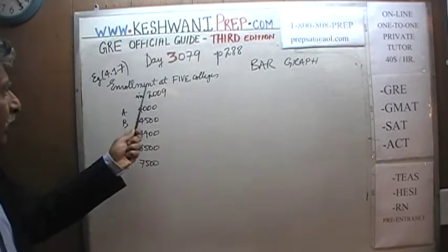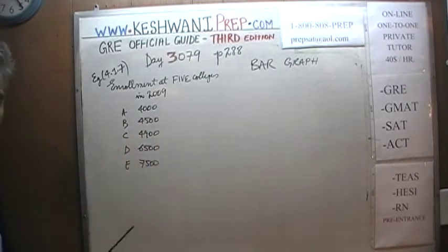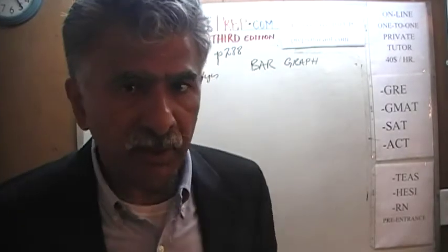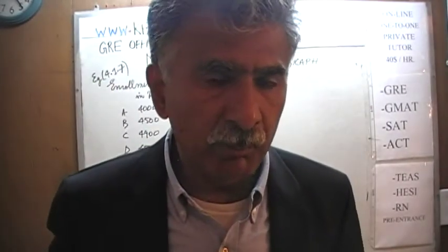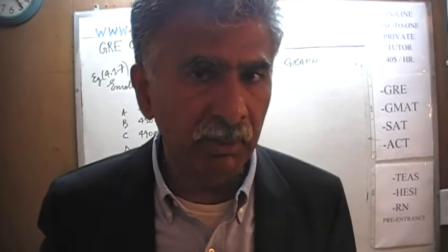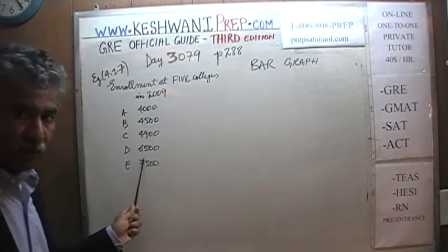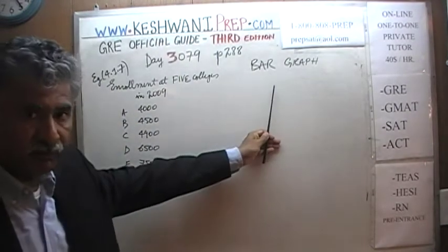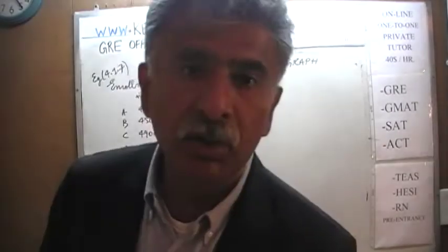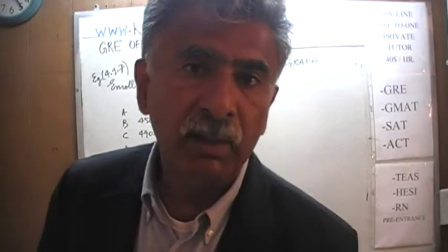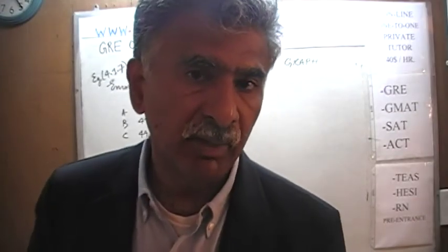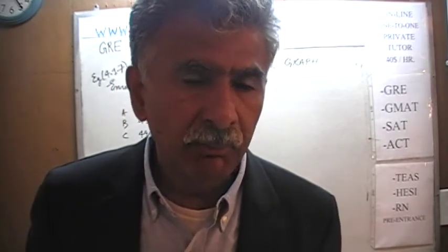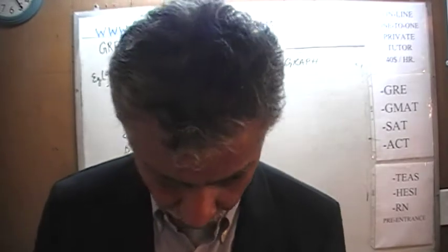We are given enrollment at five colleges in 2009. We're going to use the raw data to make the bar graph, and then we're going to erase this raw data — because in the exam, we won't have it. We'll just have the graph in front of us. A bar graph will be presented and they'll ask a couple of questions based on it. Once we finish plotting, we're going to answer those questions.